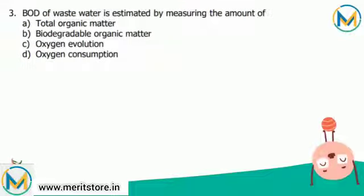BOD of wastewater is estimated by measuring the amount of: total organic matter, biodegradable organic matter, oxygen evolution, or oxygen consumption. BOD, that is Biological Oxygen Demand, generally represents how much oxygen is needed to break down organic matter in water.